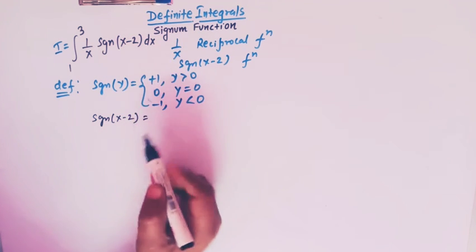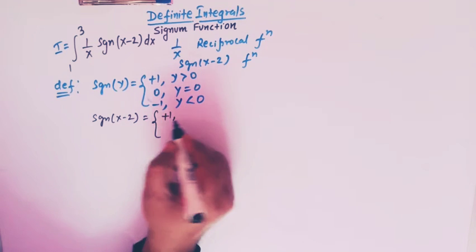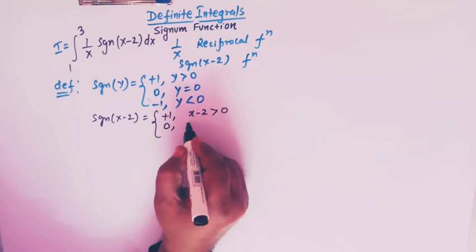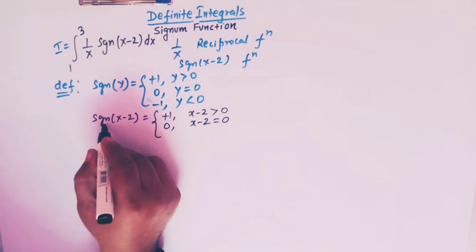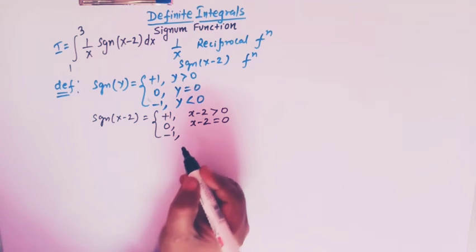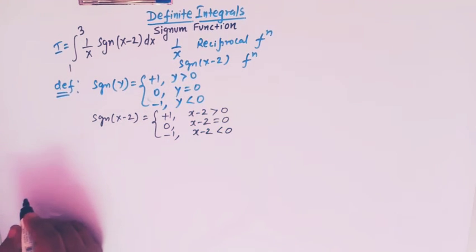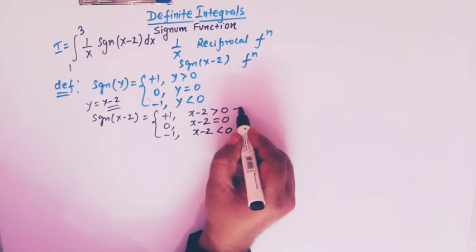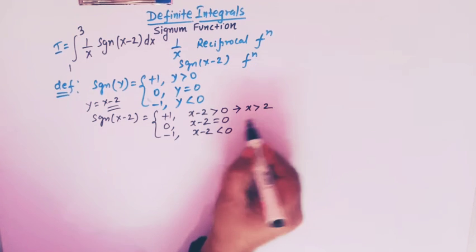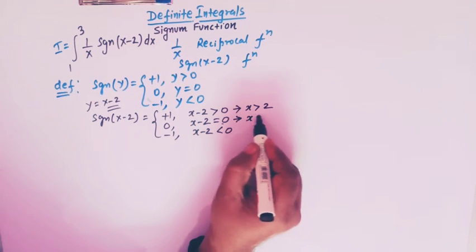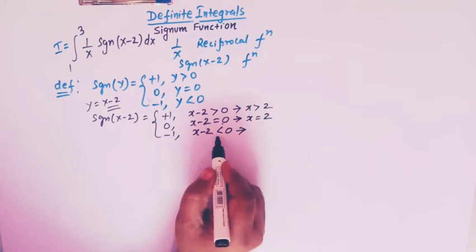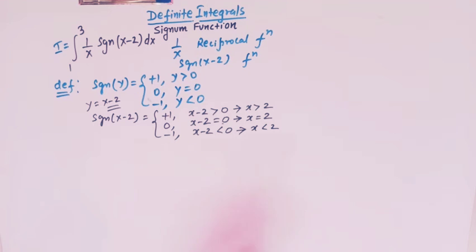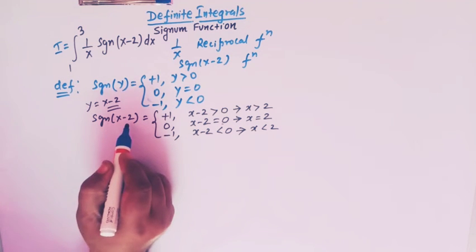Now here we have signum of x minus 2, so we apply this definition with y equal to x minus 2. Signum of x minus 2 equals plus 1 when x minus 2 is greater than 0, i.e., x greater than 2; equals 0 when x minus 2 equals 0, i.e., x equals 2; and equals minus 1 when x minus 2 is less than 0, i.e., x less than 2.